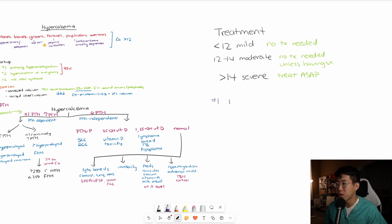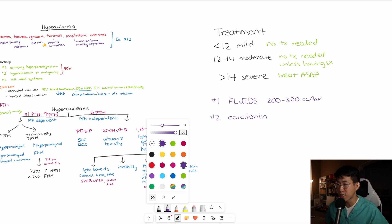Treatment number one is fluids. This is one of the hallmarks of treatment. A lot of these patients are extremely volume depleted, so you want to flood them with fluids. They recommend doing something like 200 to 300 cc's an hour. This is the first thing you want to start right away. Number two is calcitonin. Calcitonin increases the amount of calcium you urinate out, but more importantly, it inhibits bone resorption and osteoclast activity.